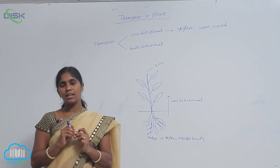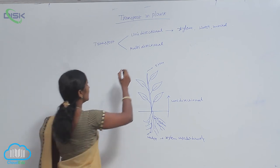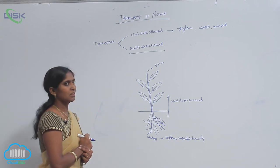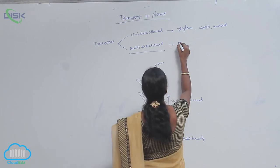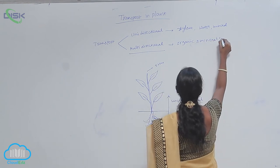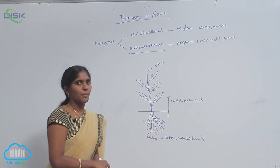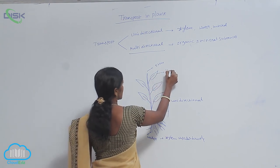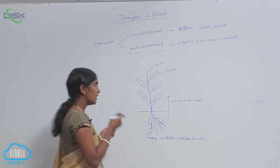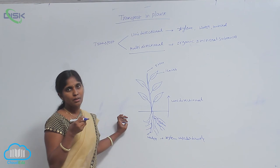So, water movement in xylem is unidirectional. But transportation of organic and mineral substances is multidirectional. These substances are produced at the leaves, because the leaf is the site of photosynthesis. At the leaves, the organic molecules and minerals are produced.